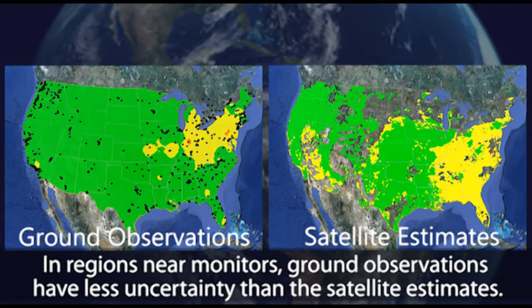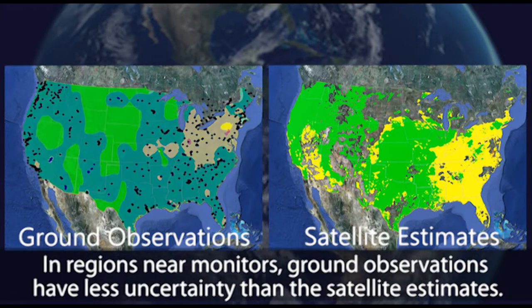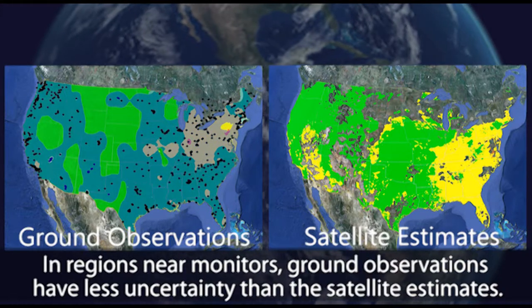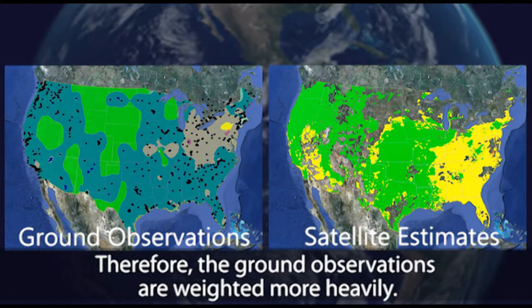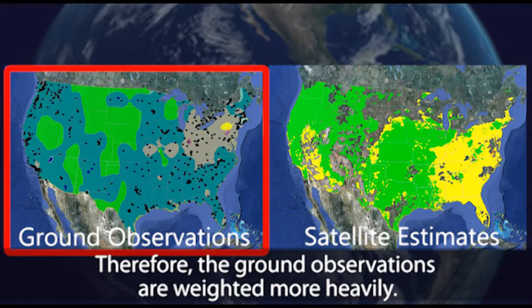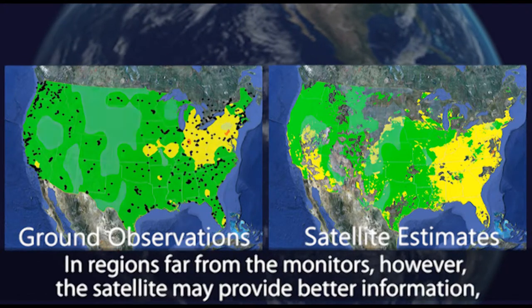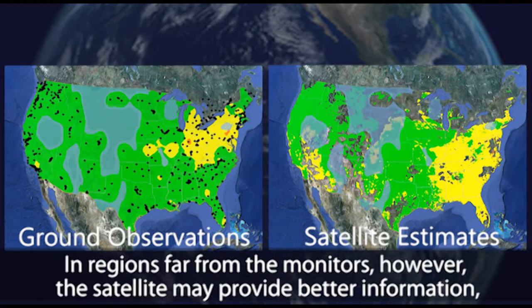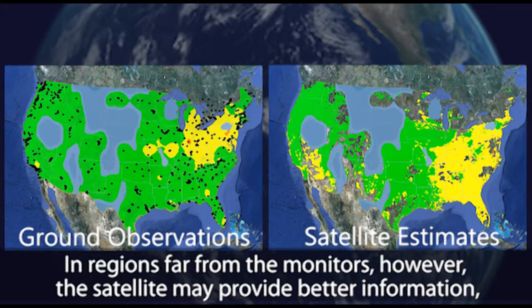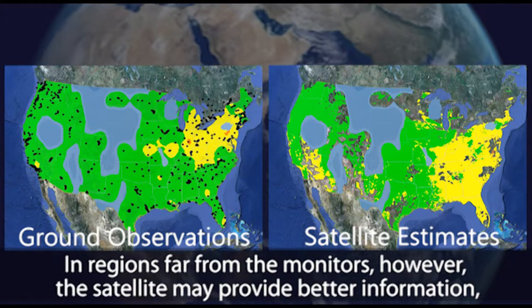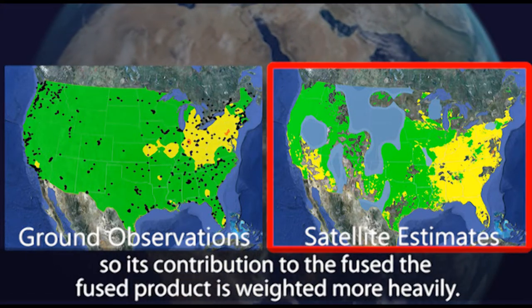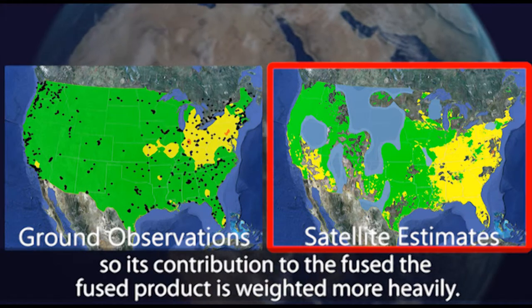In regions near monitors, ground observations have less uncertainty than the satellite estimates. Therefore, the ground observations are weighted more heavily. In regions far from the monitors, however, the satellite may provide better information, so its contribution to the fused product is weighted more heavily.